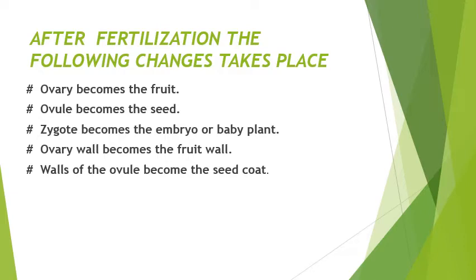The zygote will become the embryo or baby plant. The wall of the ovary changes into the fruit wall. The wall of the ovule will become the seed coat. In certain fruits, however, the sepals do not wither off — for example, in brinjal, chili, and tomato the sepals persist. That green-colored part of the brinjal which we cut off and throw away is the sepals, and this is called a persistent calyx.